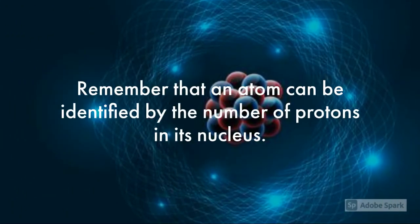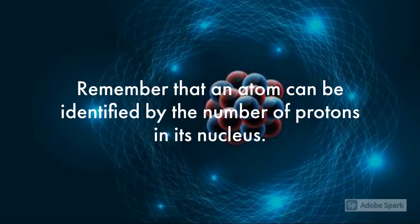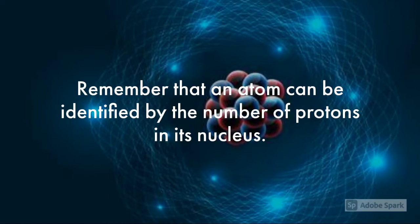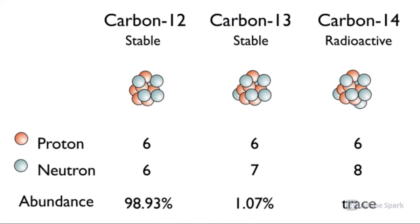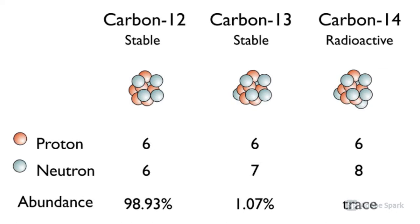Remember that an atom can be identified by the number of protons in its nucleus. Let's have a look at carbon as an example. All carbon atoms have six protons, so their proton number is six, but not all carbon atoms are identical. Some have more neutrons than others.